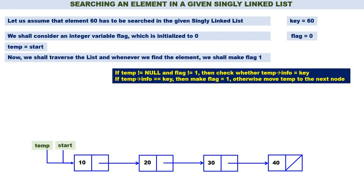Check whether temp is not equal to null — yes, temp is not equal to null because temp is containing the address of node 10. Flag is not equal to 1. Both conditions are true. Temp of info is 10, key is 60 — 10 is not equal to 60. Therefore temp is equal to temp of next. Again: temp is not equal to null, containing address of node 20. Flag is not equal to 1. Temp of info is 20, key is 60 — 20 is not equal to 60. Therefore temp is equal to temp of next.